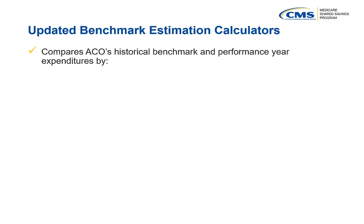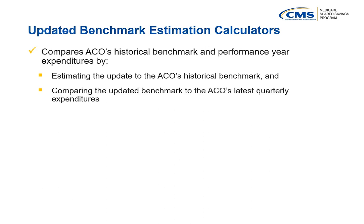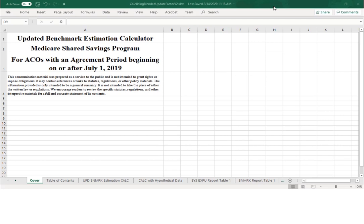Overall, the Updated Benchmark Estimation Calculator compares an ACO's historical benchmark and performance year expenditures by estimating the ACO's updated historical benchmark. It then compares the updated benchmark to the ACO's latest quarterly expenditures, which serve as a point of comparison for the ACO. Now let's go into the CalcUsingBlendedUpdateFactor V2 Workbook.